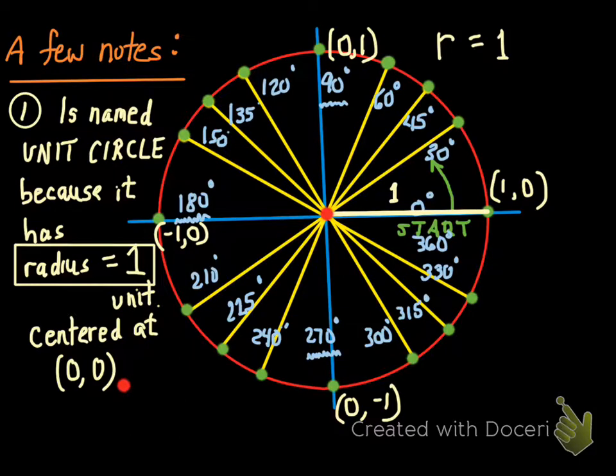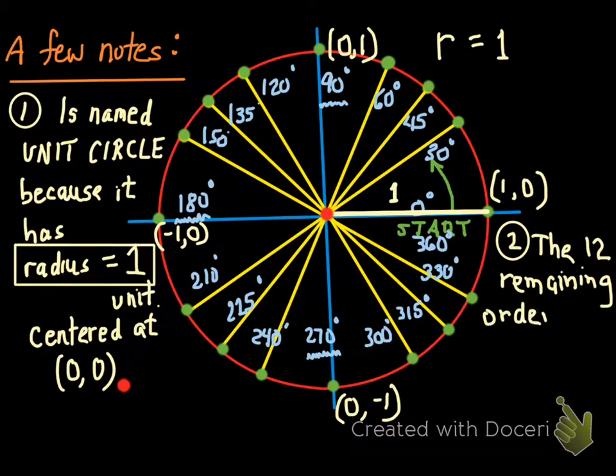Now I realize that you've got additional ordered pairs that we haven't labeled yet. We've got 12 remaining ordered pairs that we haven't labeled yet.